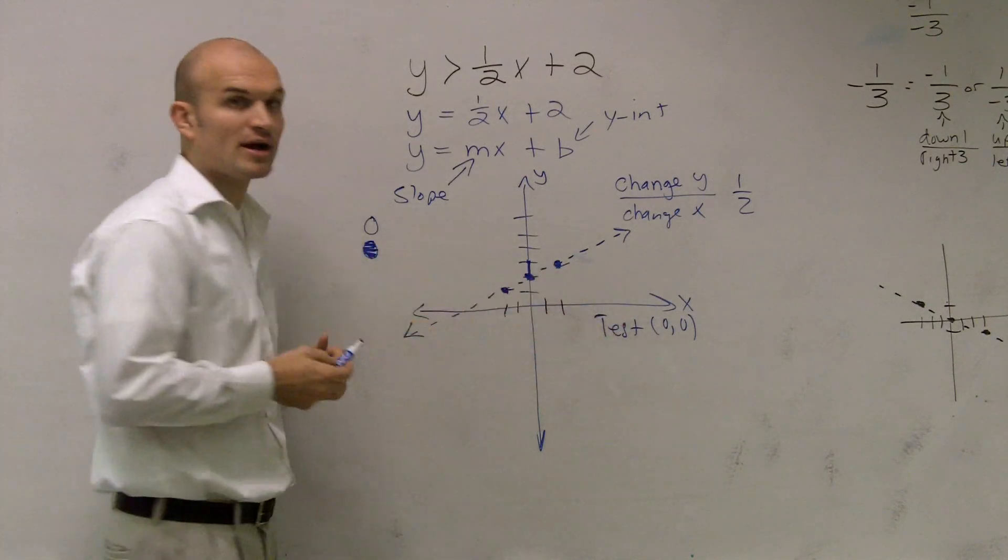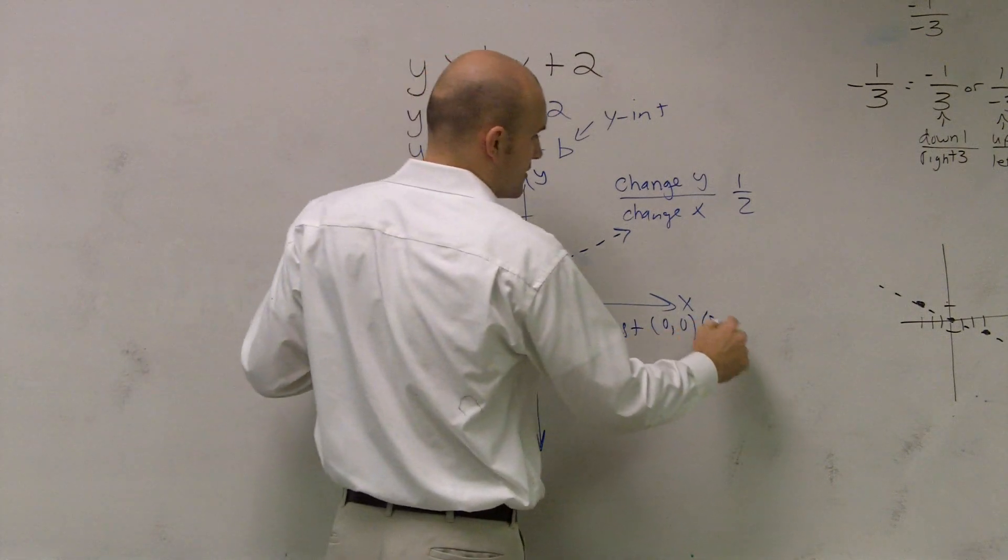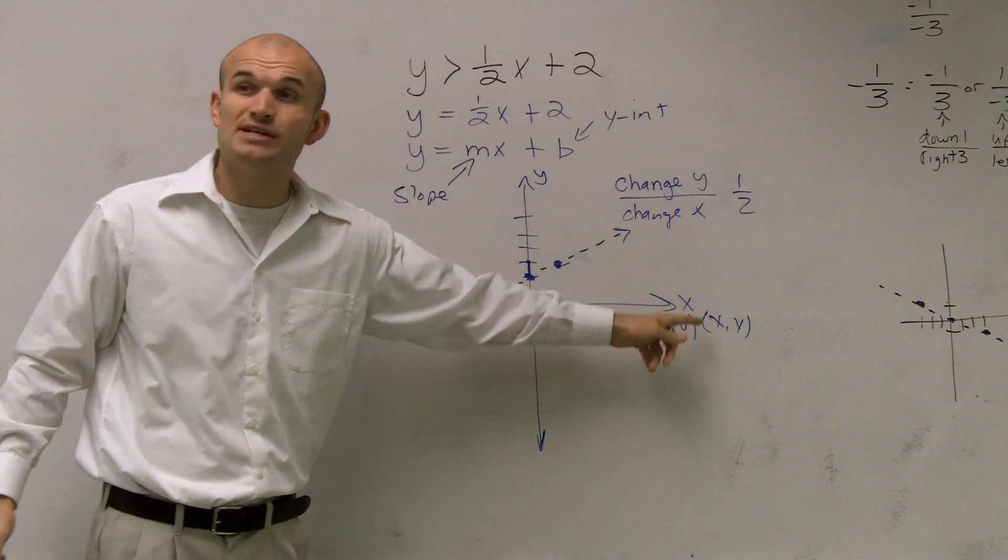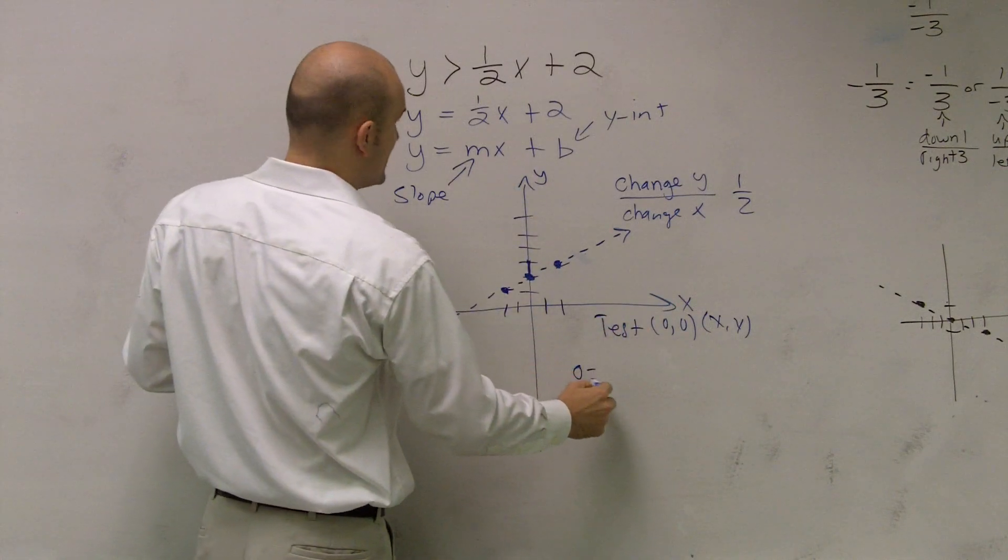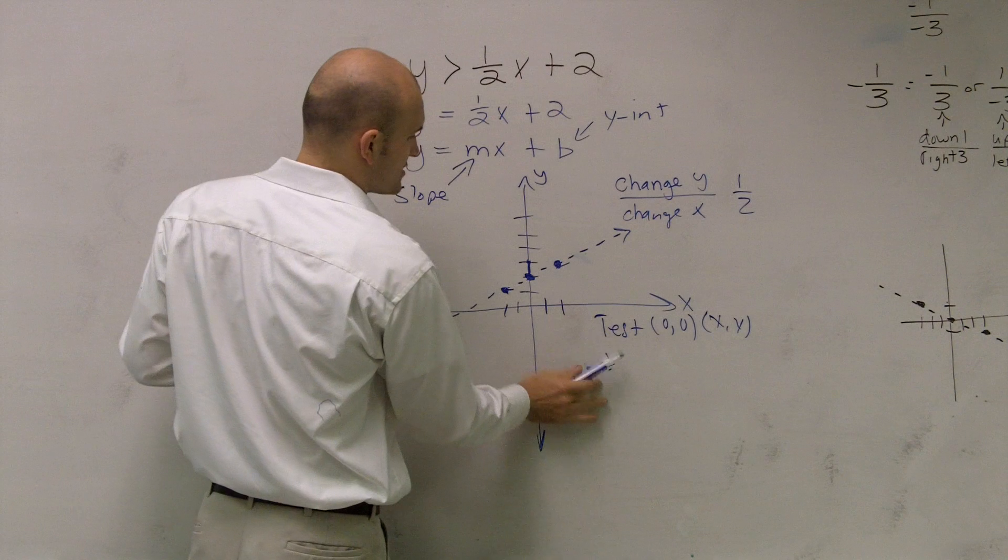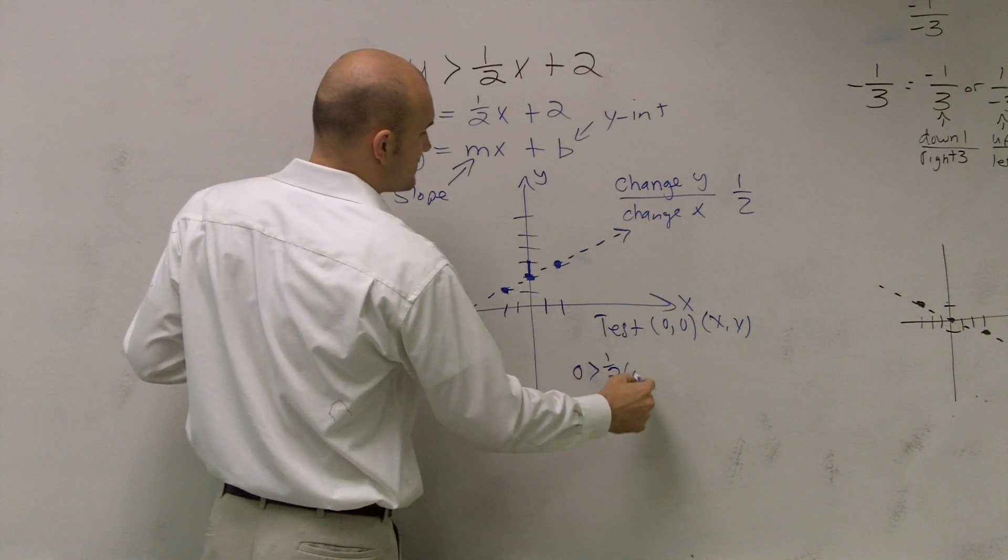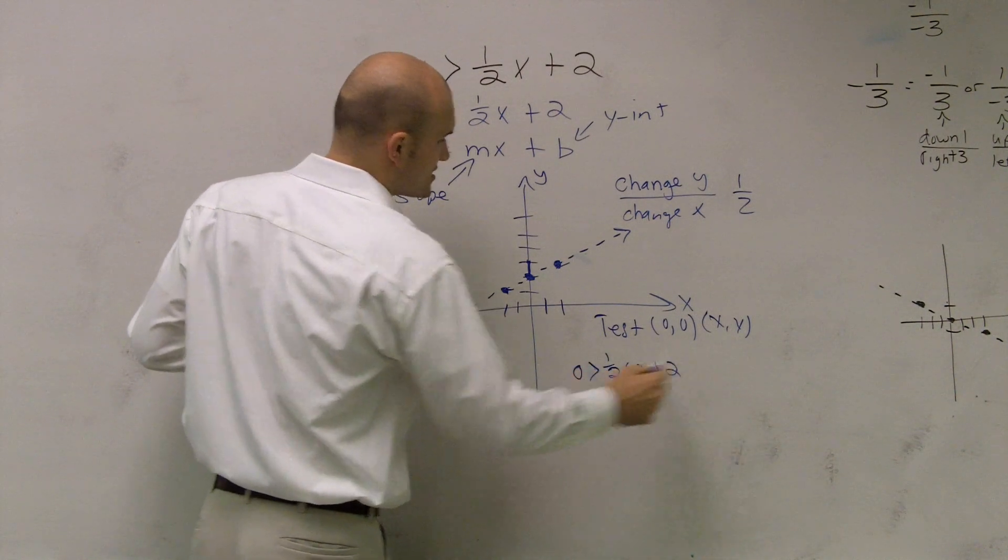So now, remember, a coordinate has an x and a y coordinate, x comma y. So therefore, 0, 0, you can plug in for x and y. So therefore, I have 0 is greater than 1/2 times 0 plus 2.